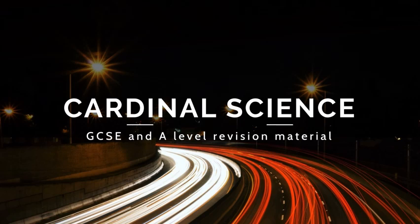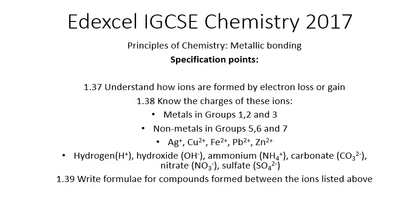Hello, welcome back to Cardinal Science for this first video on ionic bonding. Now the points we're going to study today aren't strictly ionic bonding. However, they are the very important background information that you need to do it. If you can't do this, you'll really struggle with ionic bonding. We're looking at 1.37, 3.8, and 3.9. We need to understand how ions are formed by electron loss or gain, know a bunch of charges, and be able to write formulae based on those charges.